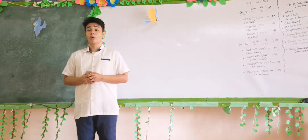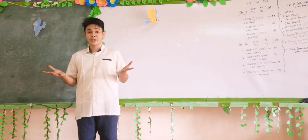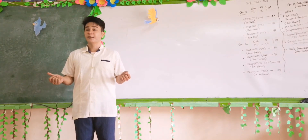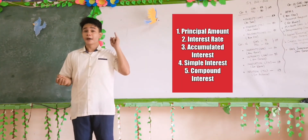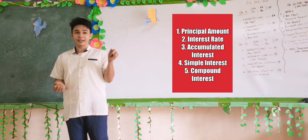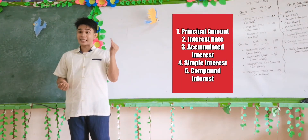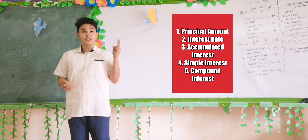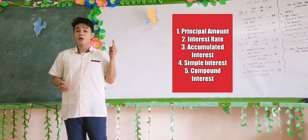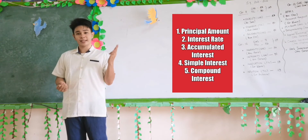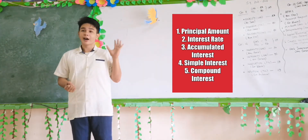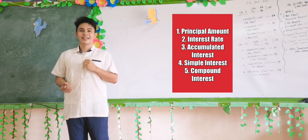To recapitulate, what are the five basic concepts of interest? First, principal amount. Second, interest rate. Third, accumulated interest. Fourth, simple interest. And lastly, compound interest.